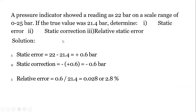A pressure indicator shows a reading of 22 bar on a scale range of 0–25 bar, with a true value of 21.4 bar. The static error is 22 − 21.4 = +0.6 bar. The static correction is −0.6 bar. The relative error with respect to true value is 0.6 / 21.4 = 2.8% of true value. It can also be expressed as 0.6 / 25 as a percentage of full scale deflection.